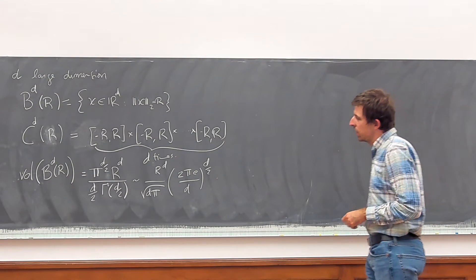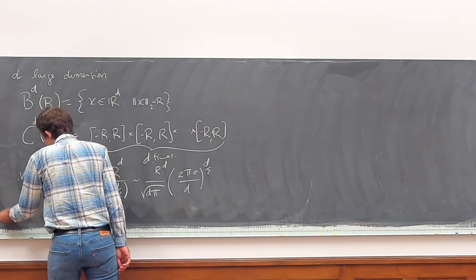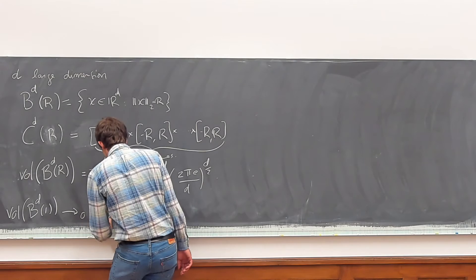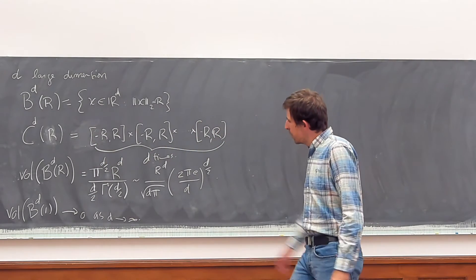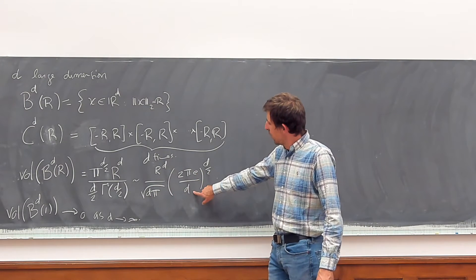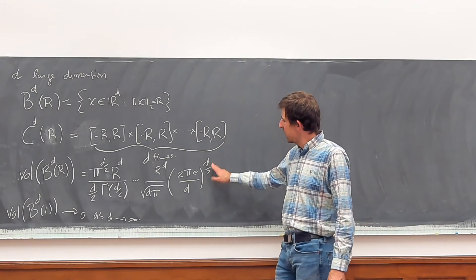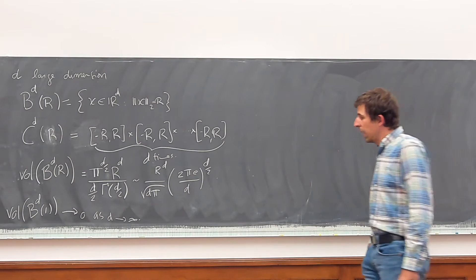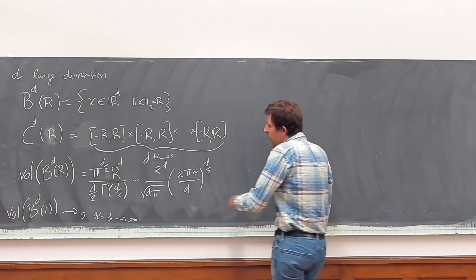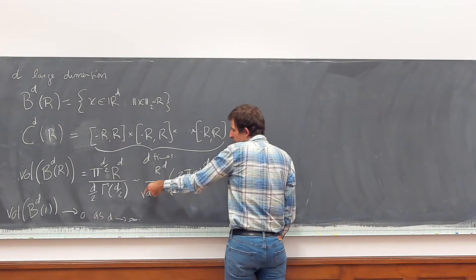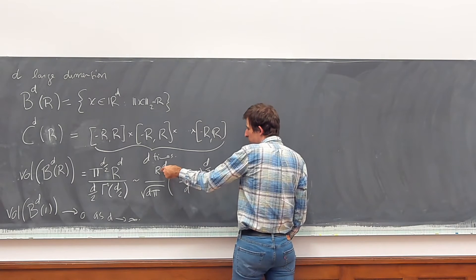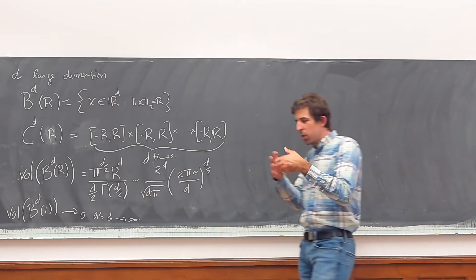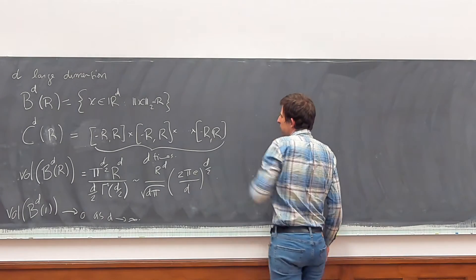In particular, the volume of the unit sphere goes to zero very quickly as d goes to infinity, because you get a factor of 1 over d^d roughly. In order for the volume to stay constant, you would need R to be something like sqrt(d). So in order for the volume to stay constant, the ball would need to grow quite a bit.